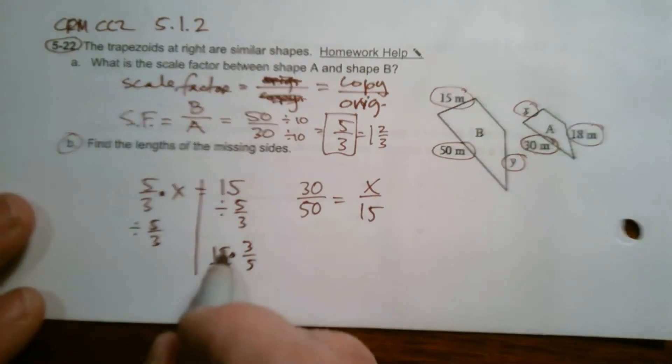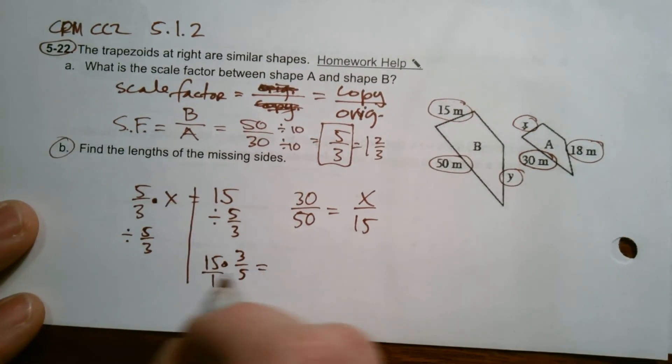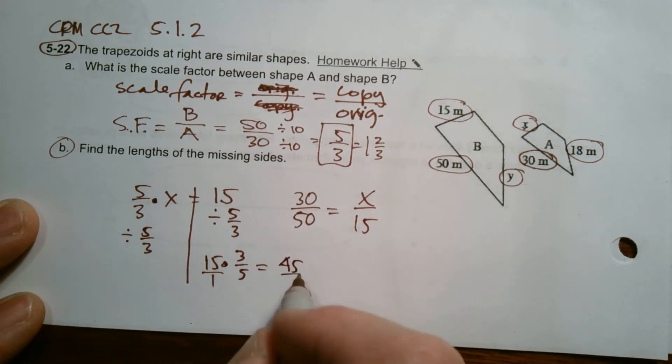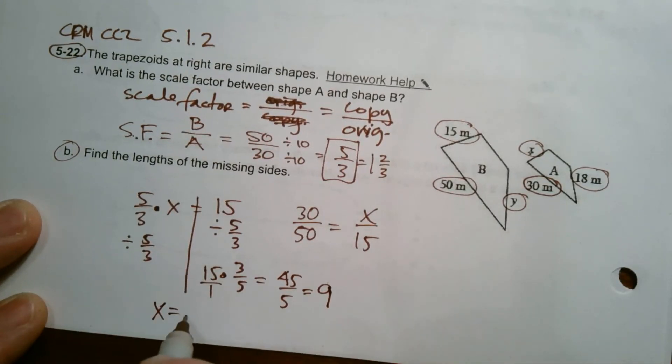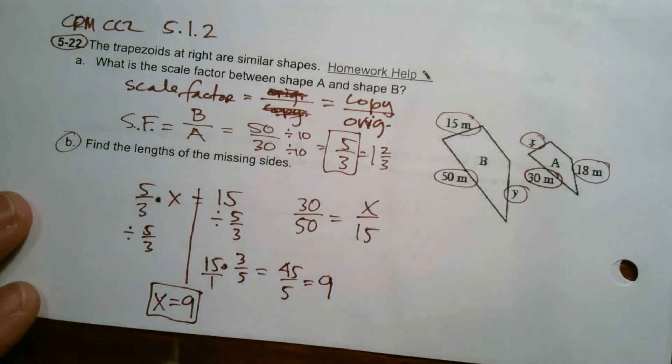When you have a fraction multiplied by a whole number, put the whole number over one. You could just multiply straight across and then simplify. 15 times 3 is 45, 45 over 5. Well, that actually simplifies to be 9. So in this case, we just determined that X is equal to 9. That's one way of finding it.